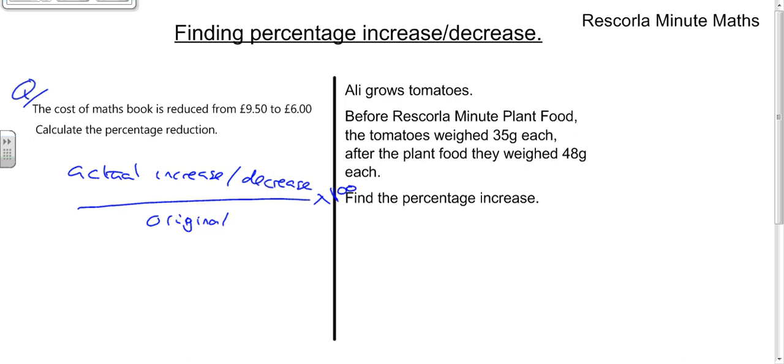The actual decrease is from £9.50 down to £6.00, so the actual amount that's gone down is £3.50. So £3.50 divided by the original price, which is £9.50, and then you times that by 100. So £3.50 divided by £9.50 times by 100 is 36.8%.